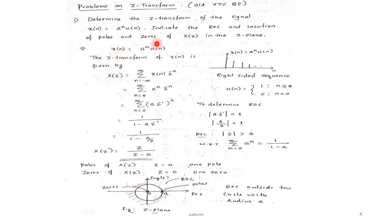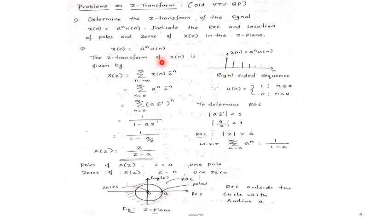Here X(N) is E to the power N times U(N). The signal is multiplied with U(N), so it is a right-sided sequence. It is a right-sided sequence because U(N) is 1 for N greater than or equal to 0, and 0 for N less than 0. Now we will use the definition of Z-transform: the Z-transform of X(N) is given by X(Z) equal to summation over N from minus infinity to plus infinity of X(N) Z to the power minus N.